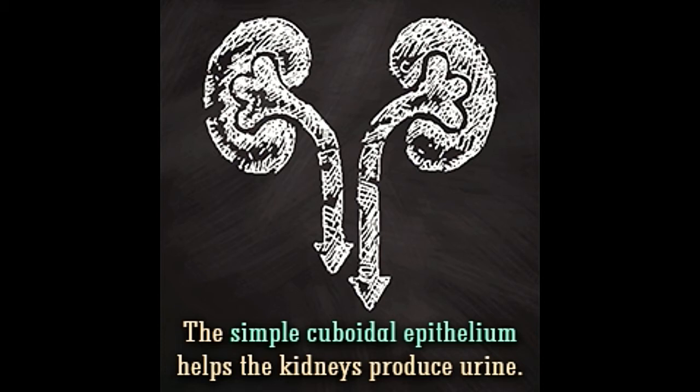Such ducts include those connecting salivary glands to the mouth, sweat glands to the skin, and so on. The simple cuboidal epithelium is found in the following locations: kidney tubules, ducts of salivary glands, ducts of sweat glands, bile duct, follicles of thyroid gland, pancreas, liver, mammary glands, covering of the lens, germinal epithelium of ovaries and testes, choroid plexus — network of blood vessels in the brain — lining of bronchioles, and air tubes in the lungs.